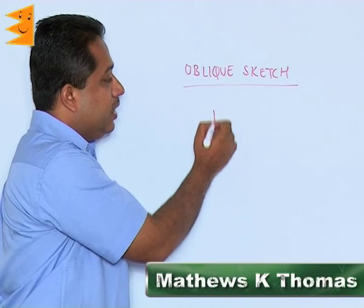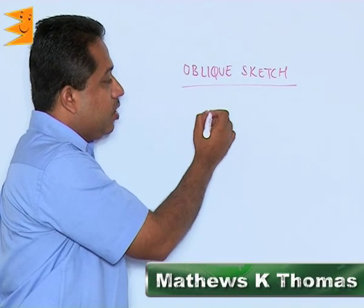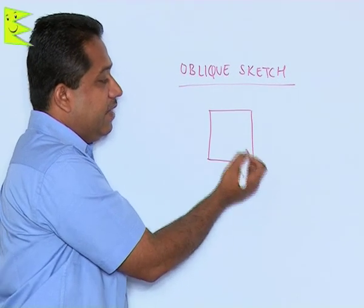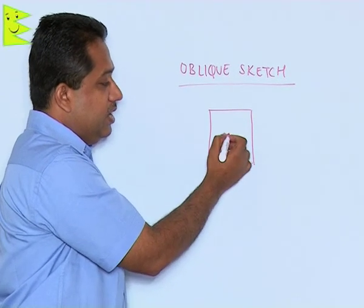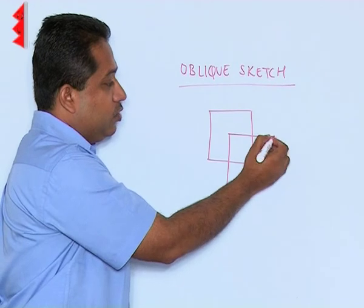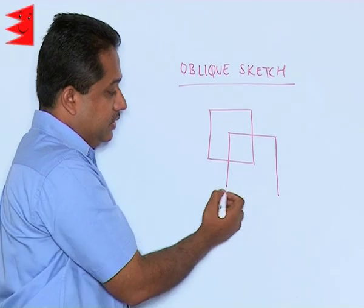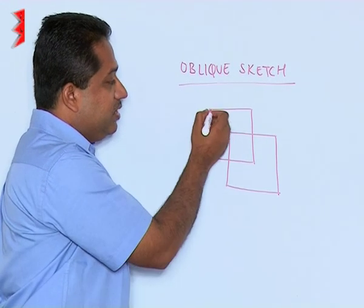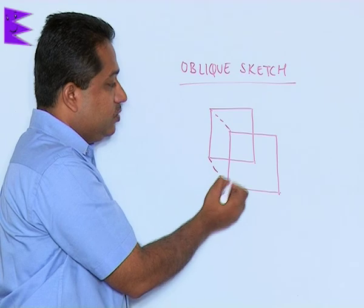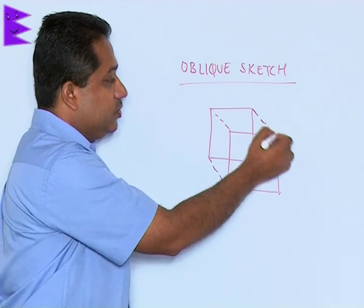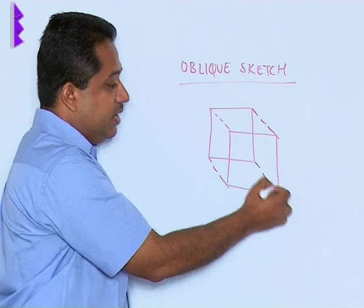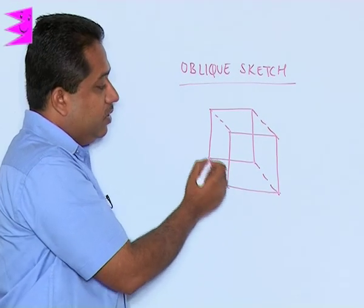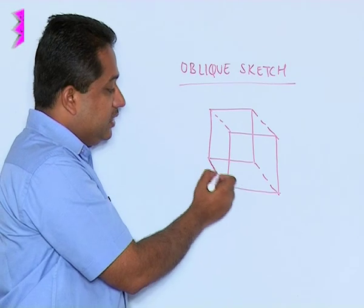A cube can be drawn by first drawing a square and then another square — so we have two squares. Then we join this vertex to this, this to this, this to this, and finally this to this. So this is a cube.